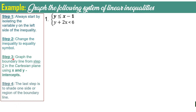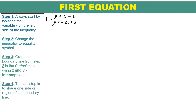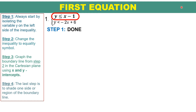We will follow the same steps used in graphing a linear inequality. Let us start with the first equation. In step 1, always start by isolating the variable y on the left side of the inequality. The first equation is y is less than or equal to x minus 1. As you can see, y is already isolated on the left side, so step 1 is already done.